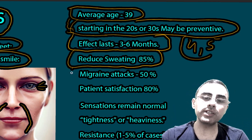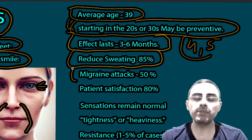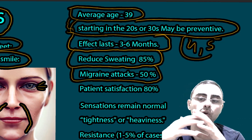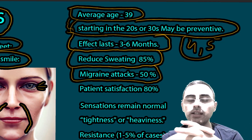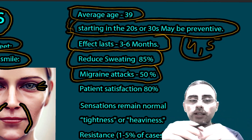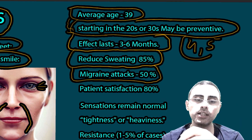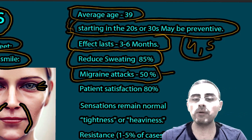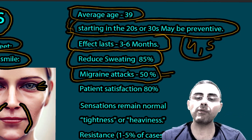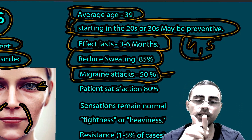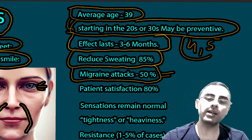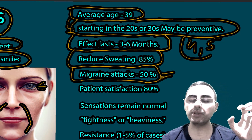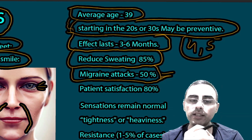Botox injections decrease migraine attacks by about 50%, and are therefore also used to treat migraine. Injections are made around the head, forehead, neck, and shoulders at specific sites. There is no well-established explanation for why this works, but it is thought that Botox stops pain spreading between neurons.